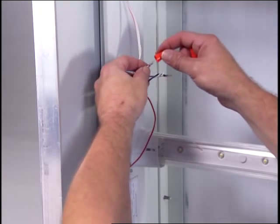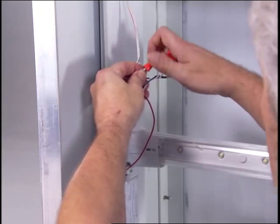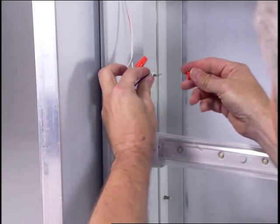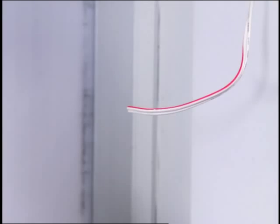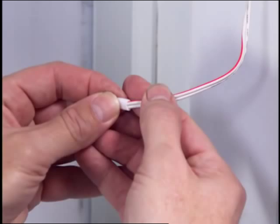Connect the LED modules to each other and to the power supply using twist-on wire connectors or in-line connections. Connect positive to positive and negative to negative. Cap all exposed wires with appropriate end caps.